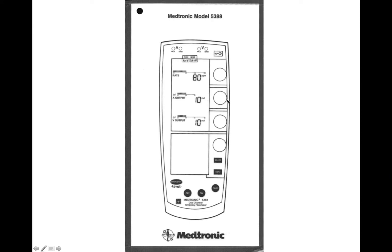The adjustment for your atrial milliamps defaults right beside the rate knob — that's the knob right here. And for your ventricular milliamps, that's just to the right of that as well. There's also a menu select button right here, which will get you to the different mode settings and adjustments for your sensitivity.